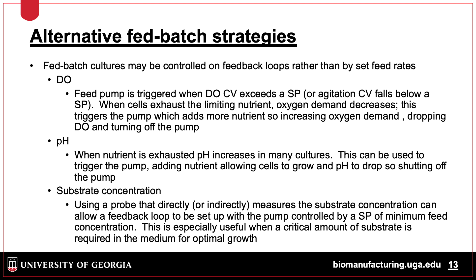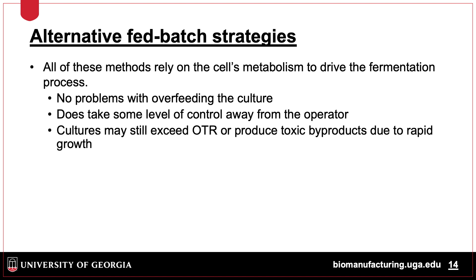Feed can also be based on conditions inside the fermenter measured by sensors. Oxygen levels can trigger a feed pump when demand decreases. The decrease in oxygen demand is linked to the substrate being used up, so more would then be added. Control can be based on pH, which increases when substrate is used up, triggering the feed pump. The substrate concentration itself can be measured either directly or indirectly, and a feedback loop can be set up to feed when substrate levels decrease. These alternate feed strategies have the advantage that cells are not overfed by blindly adding feed based on a calculated feed rate, as in traditional fed batch strategies.